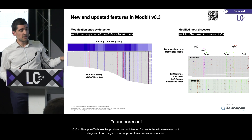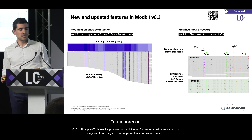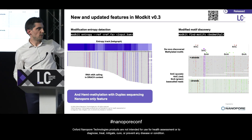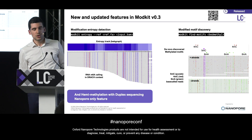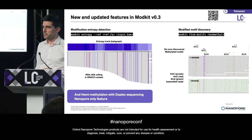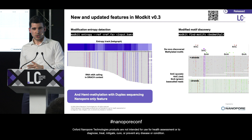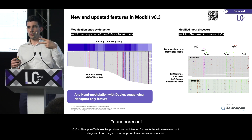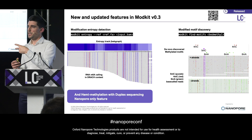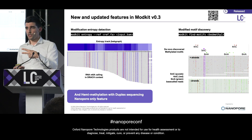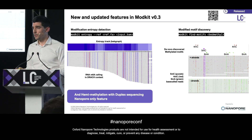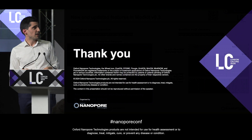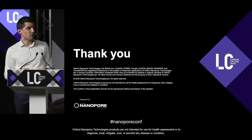All of this new functionality is released with Dorado. And let me remind you that with Modkit you can also do hemimethylation analysis — something you can only do with Nanopore. It gives you the native modification state of both strands of a double-stranded DNA molecule, which is really something you can't do with any other technology. I think that covers everything. Thank you very much.